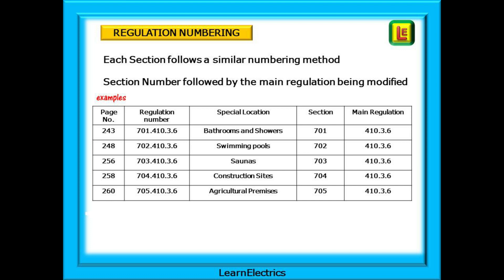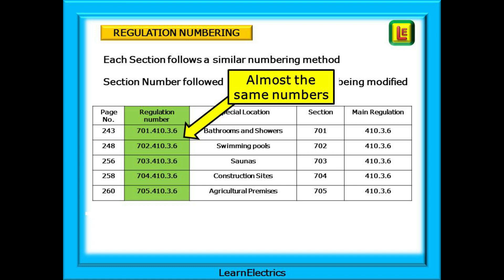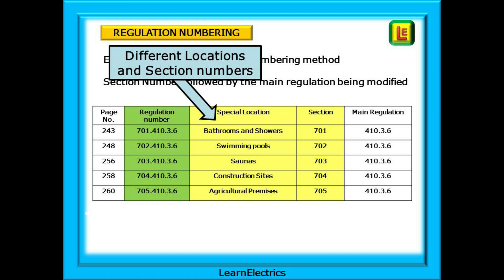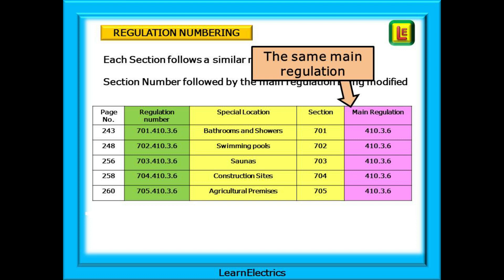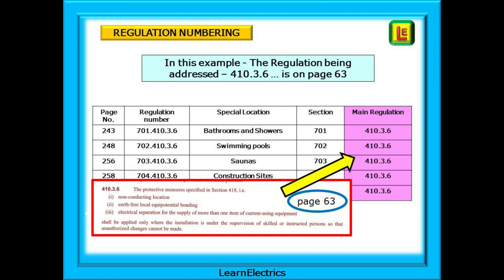This table will help you to follow along. It makes understanding and using special locations so much easier. Look at the table. Here are the regulation numbers from 5 different sections. They all start with a different number, but the last half of the regulation is the same in every case. Each regulation is specific to a different special location, with its own section number, 701, 702, etc. The end part of each regulation is identical. It is the same regulation from the main regs that is being modified. This happens a lot with special locations. Certain regulations keep making an appearance in different sections.